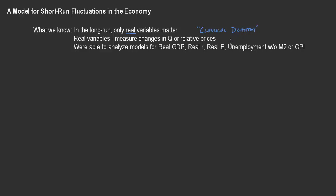There's a difference in the economy between real variables and nominal variables. Those nominal variables take into account price levels, money supply, things of that nature. But the real variables in the long run, we can just compare them because it's all relative to each other — the price level in the long run wouldn't necessarily matter. As a result of that, we were able to analyze models for real GDP, real interest rates, real exchange rates, and unemployment without considering nominal values like the money supply, which I've abbreviated as M2, or changes in the price level, which I've abbreviated as inflation or CPI.